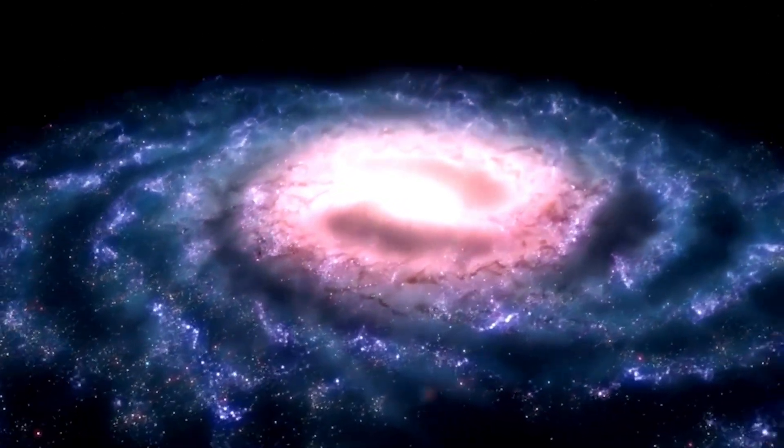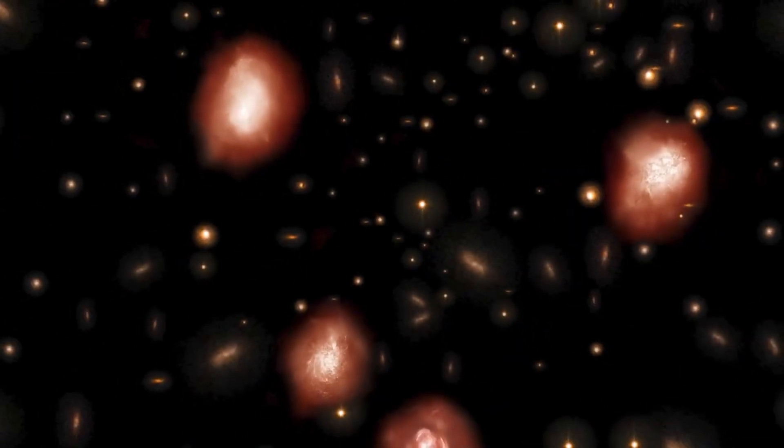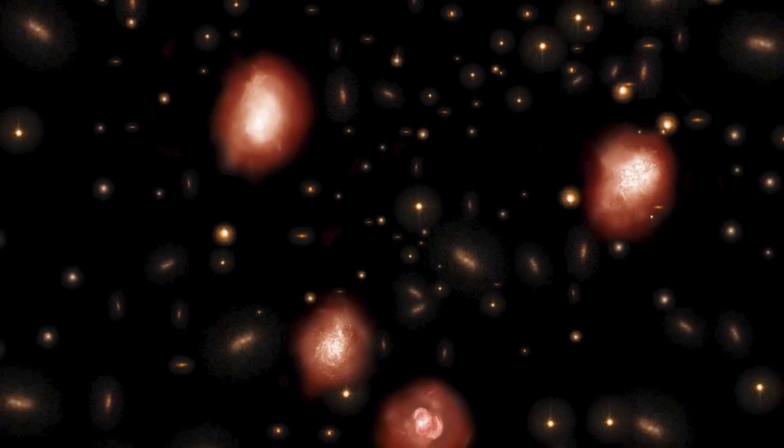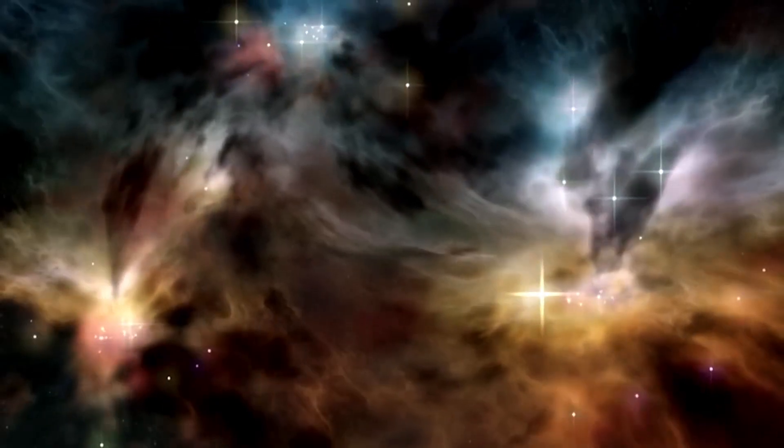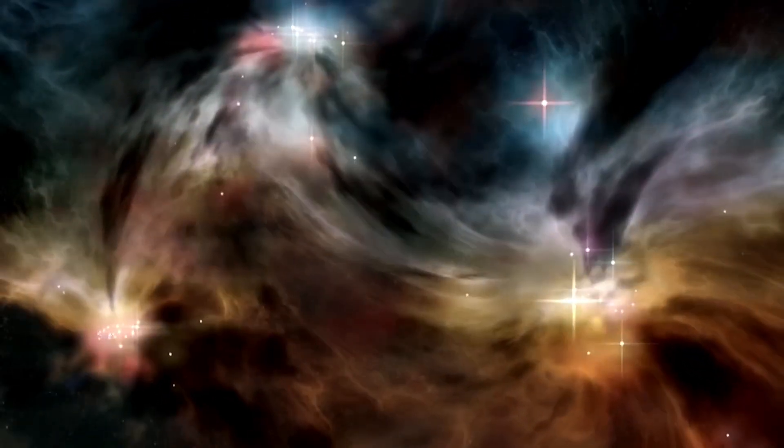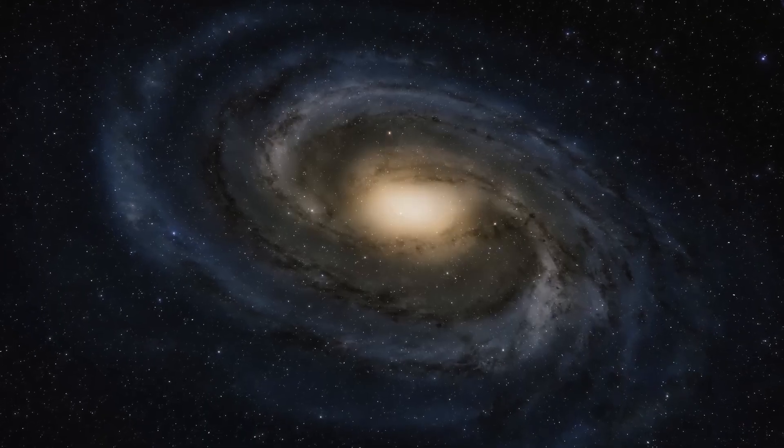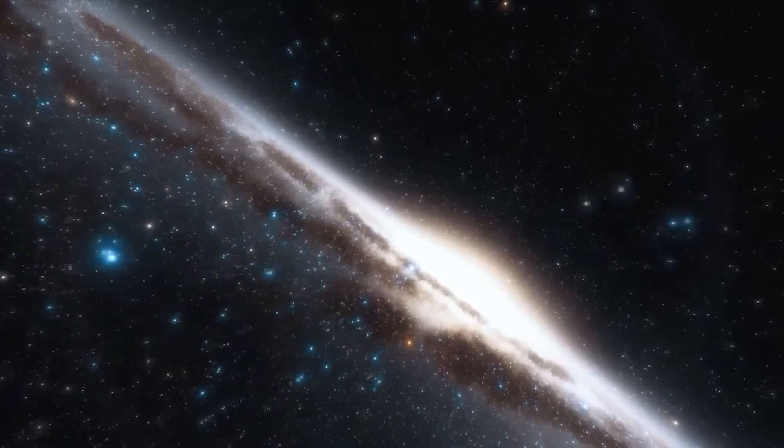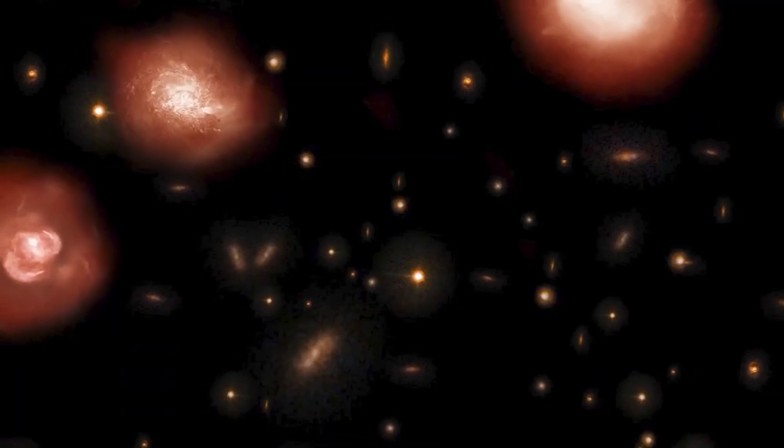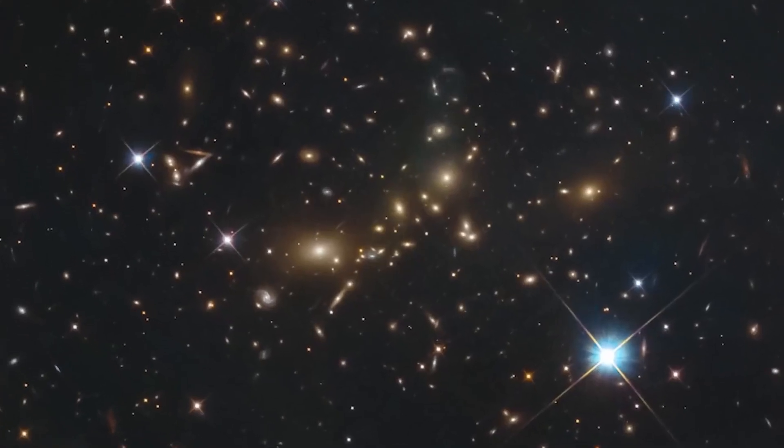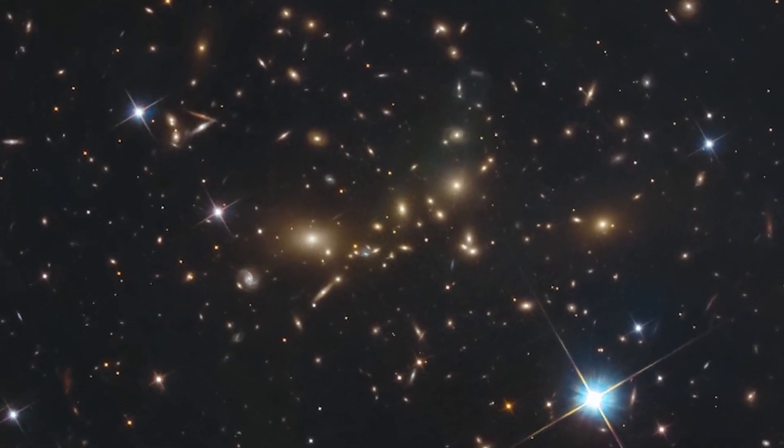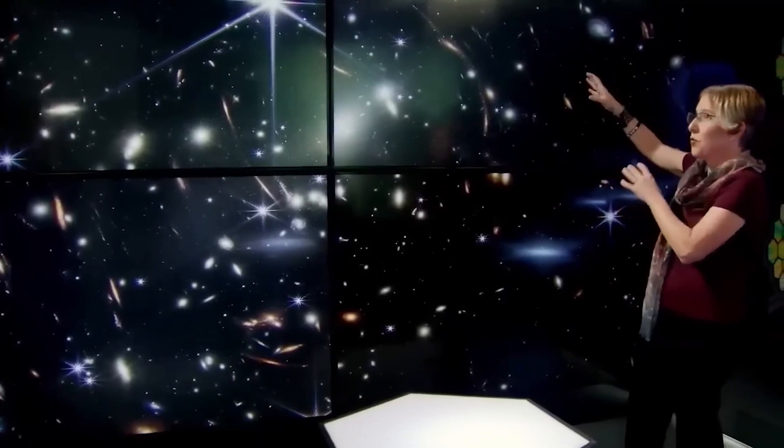But maybe it wasn't through mergers or accretion. Maybe they just formed stars naturally. After all, that does happen. The Milky Way does it too, with around a star or two forming each year on average. But this also doesn't make sense because if these six galaxies were forming new stars to grow to such a massive size, they would need to be spawning hundreds of new stars each year throughout the entire history of the universe itself. That's no exaggeration either.